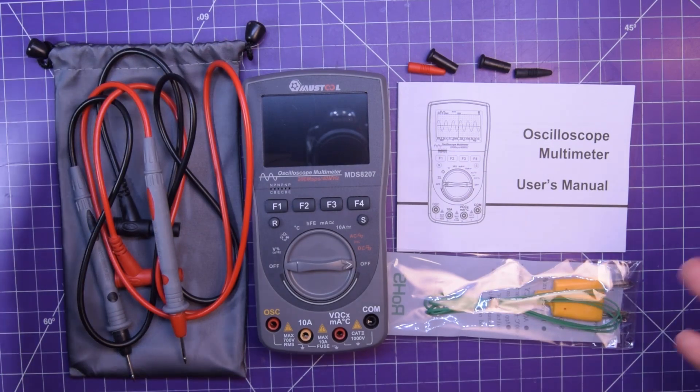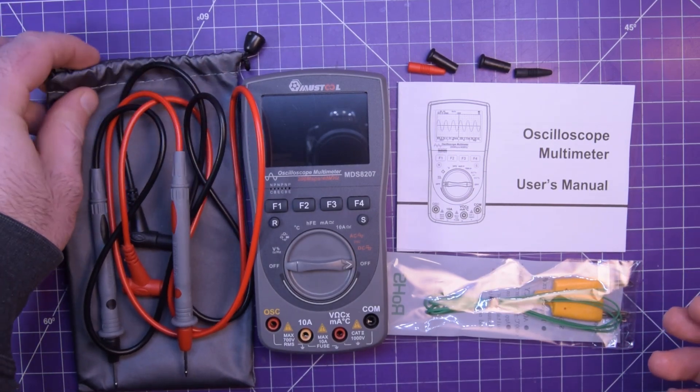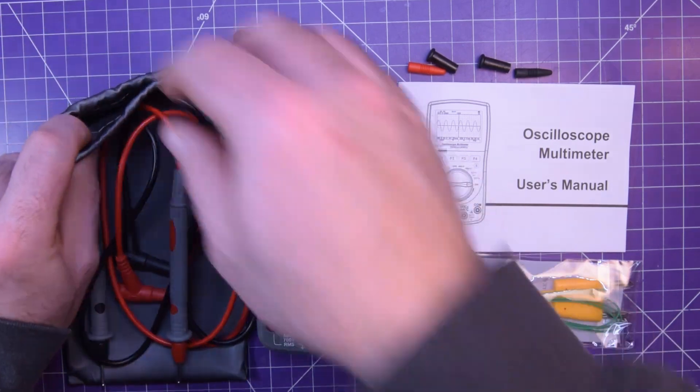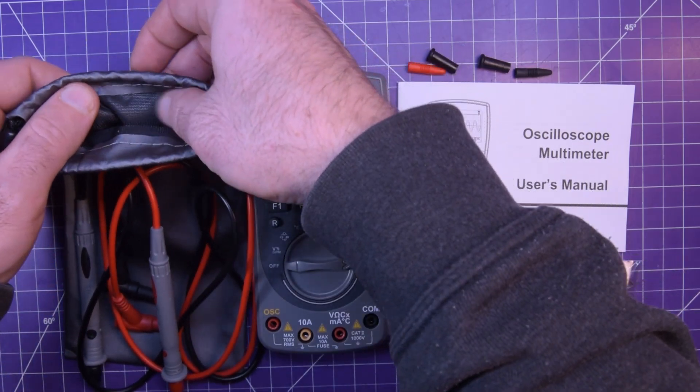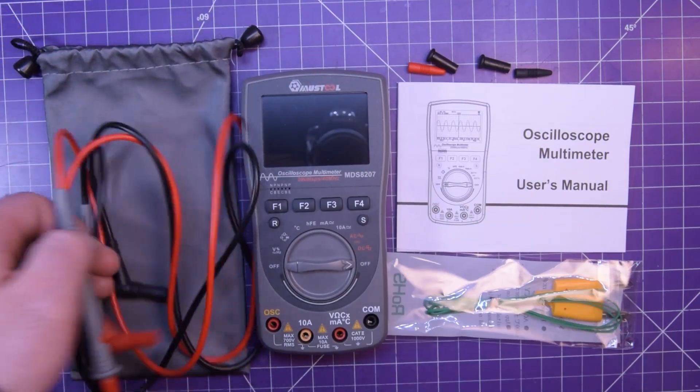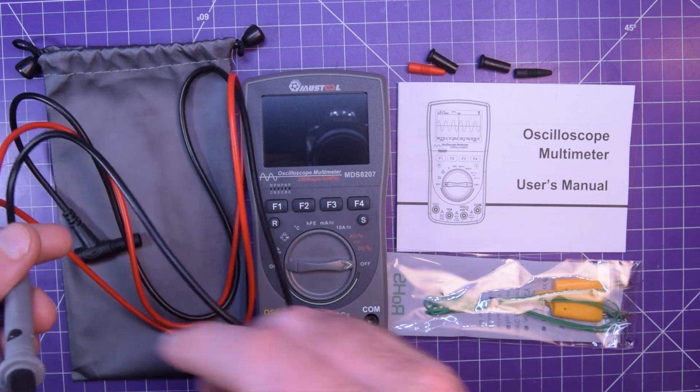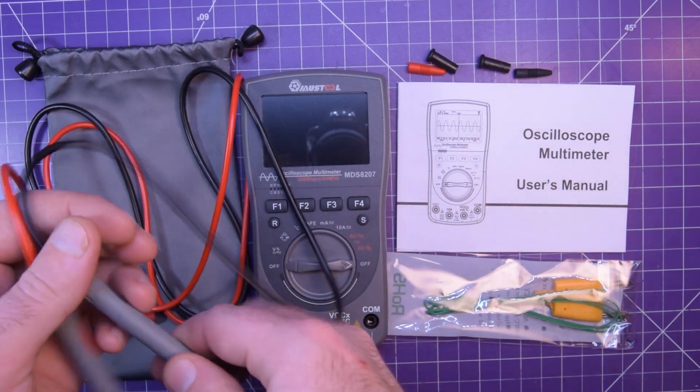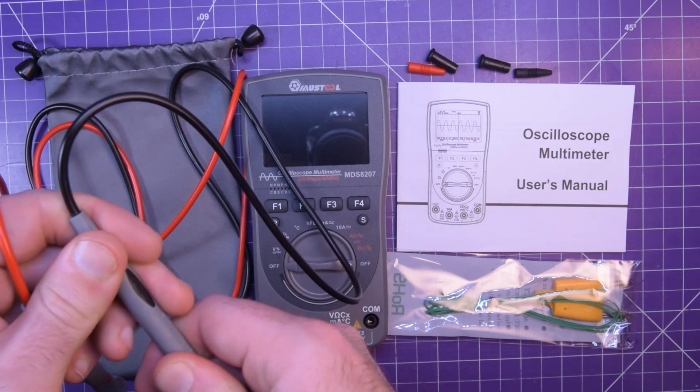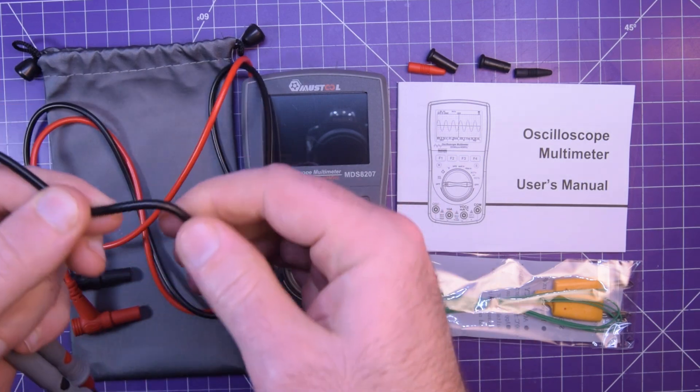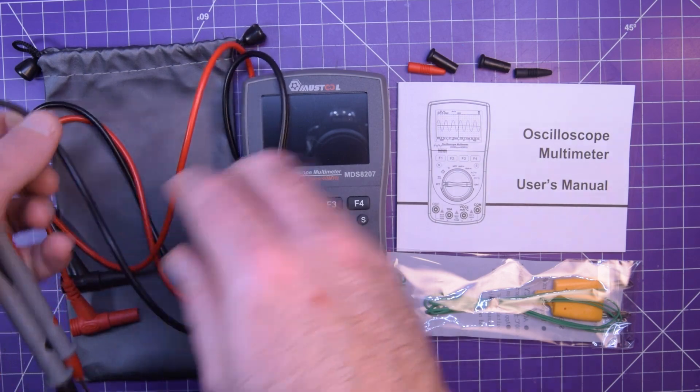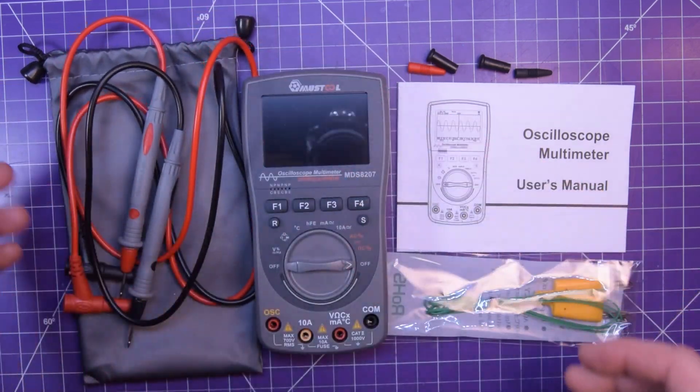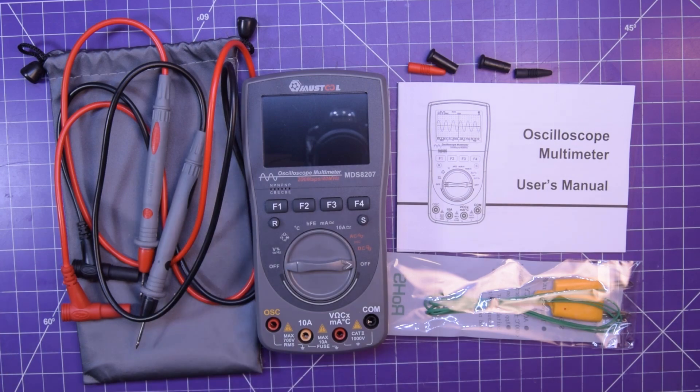It comes with everything you see here, has a nylon-y case. It is not soft on the inside, just nylon material. It comes with very basic probes, no threads to add any accessories on there. The probes are kind of cheapy and the wire is not super flexible but definitely not as unflexible as stuff I've seen before.